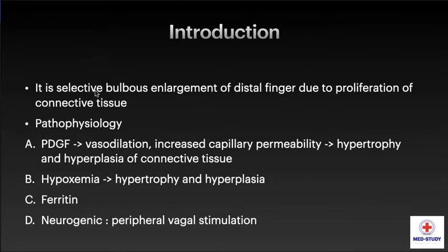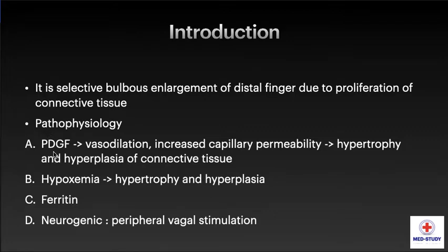Clubbing is selective bulbous enlargement of the distal finger due to proliferation of connective tissue. The pathophysiology can be attributed to platelet-derived growth factor, which results in vasodilation and increased capillary permeability, leading to hypertrophy and hyperplasia of connective tissue.